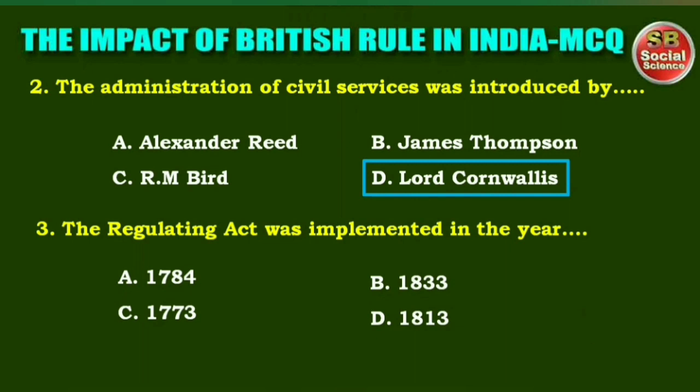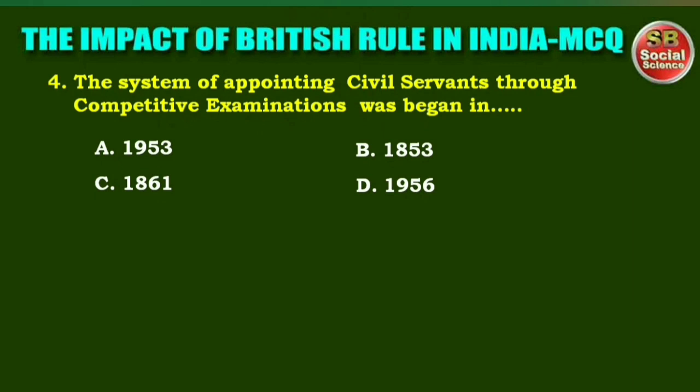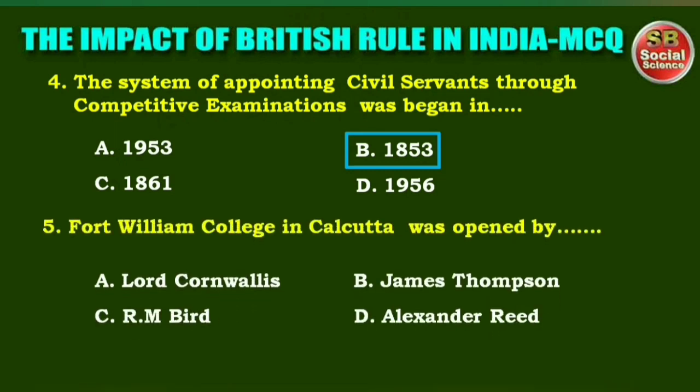Next one: The Regulating Act was implemented in the year — options are: 1784, 1833, 1773, 1813. The right answer is option C: 1773. Next question: The system of appointing civil servants through competitive examinations began in — options are: 1953, 1853, 1861, 1956. The right answer is option B: 1853.